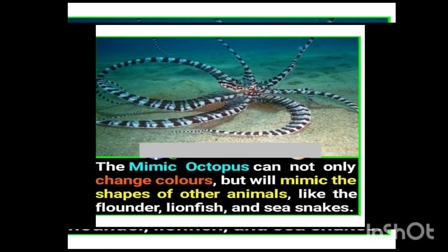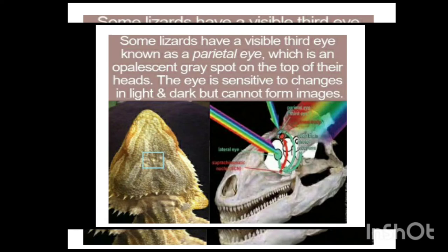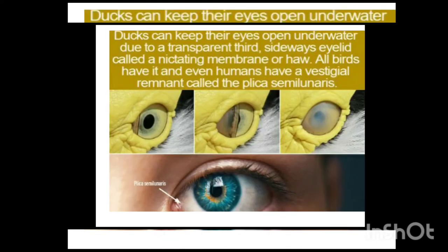Here is the mimic octopus, which cannot only change colors but can also mimic the shapes of other animals. Next, some lizards have a visible third eye known as the parietal eye, which is a gray spot on the top of their heads. This eye is sensitive to changes in light and dark but cannot form an image. Also, ducks can keep their eyes open underwater due to a transparent third eyelid — all birds have it, and even humans have this remnant called the plica.